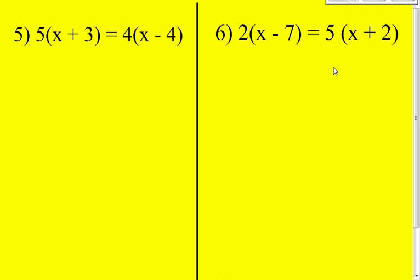The first thing you do for this one is to distribute the 5 to every term inside the parentheses. 5 times x first is 5x. 5 times 3 is 15.